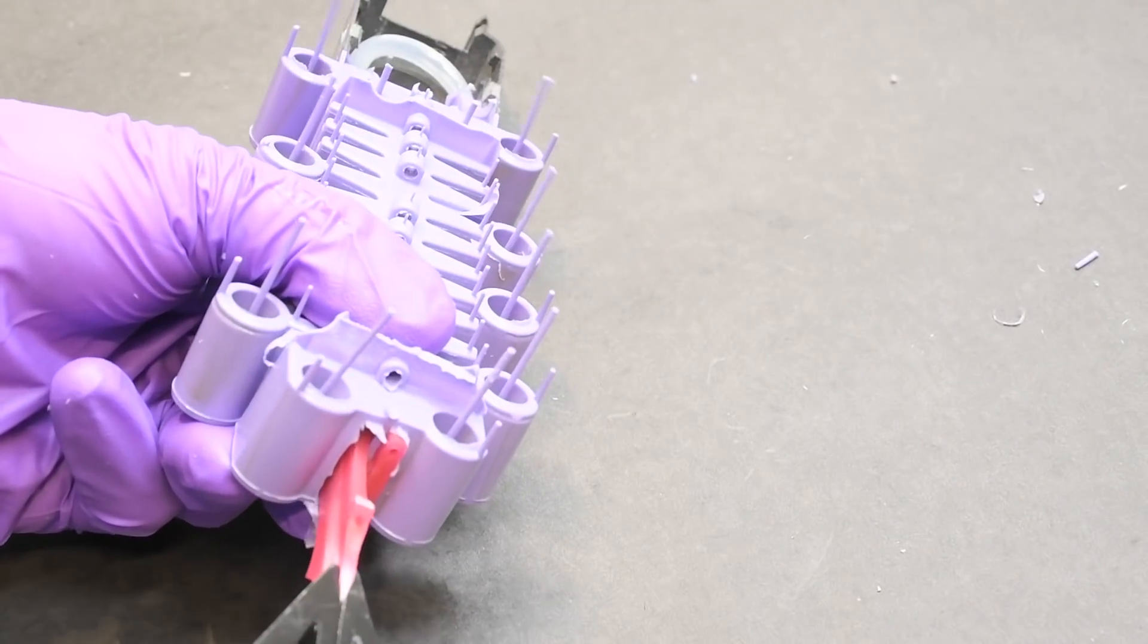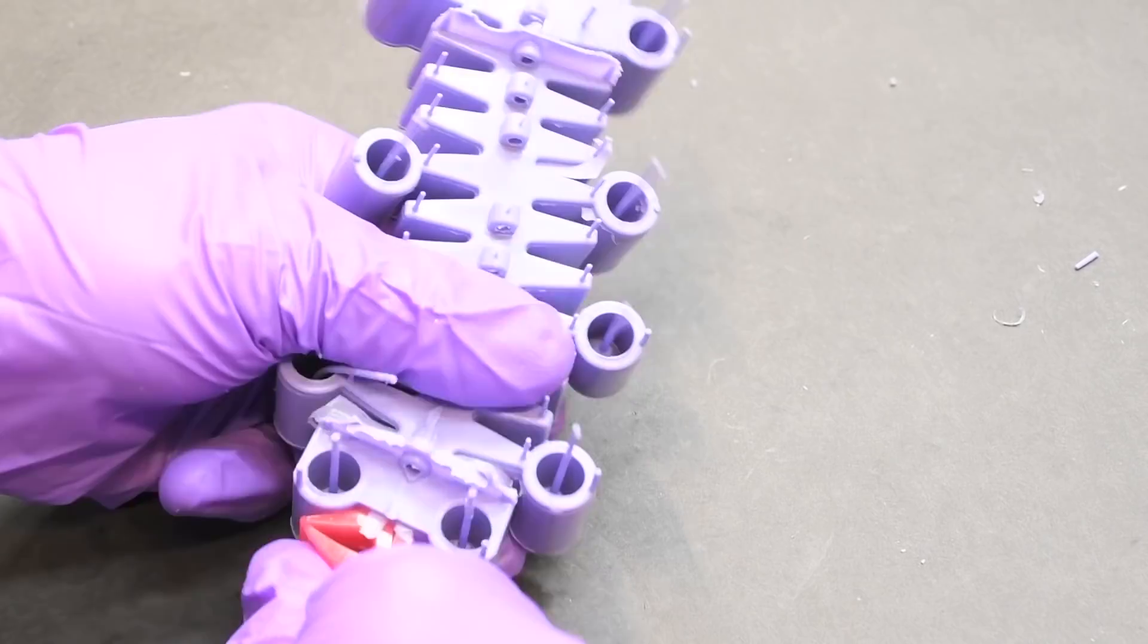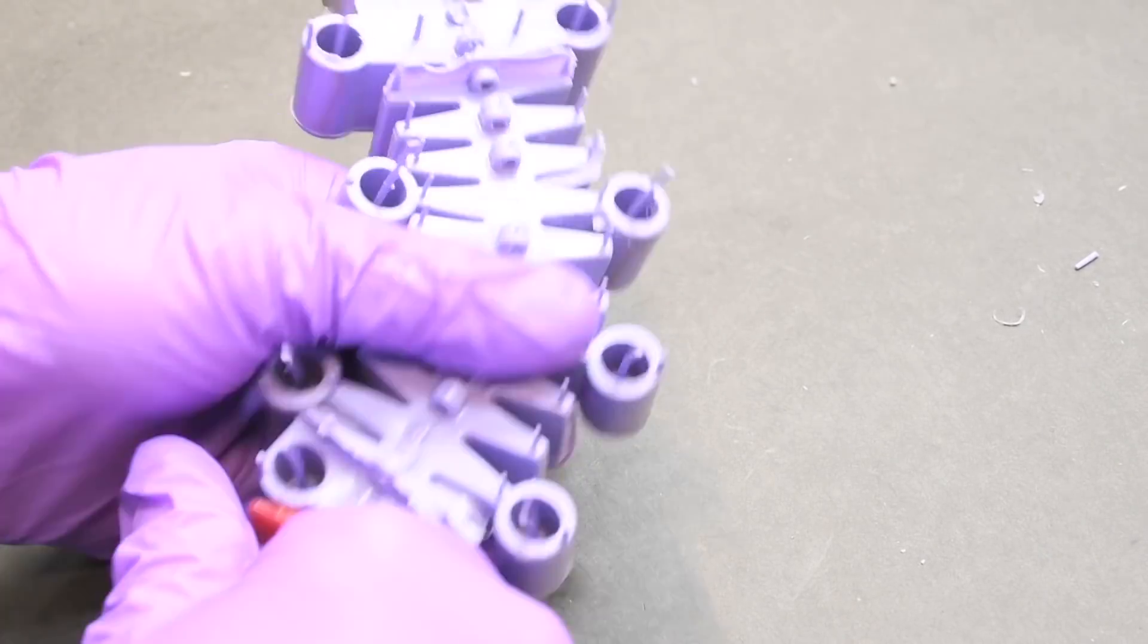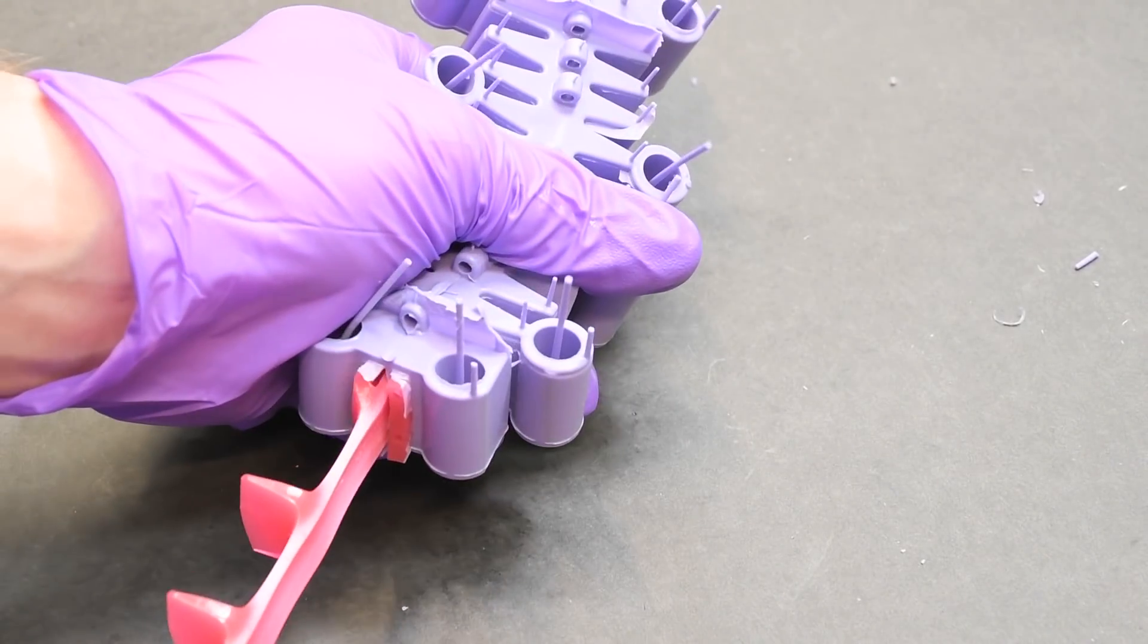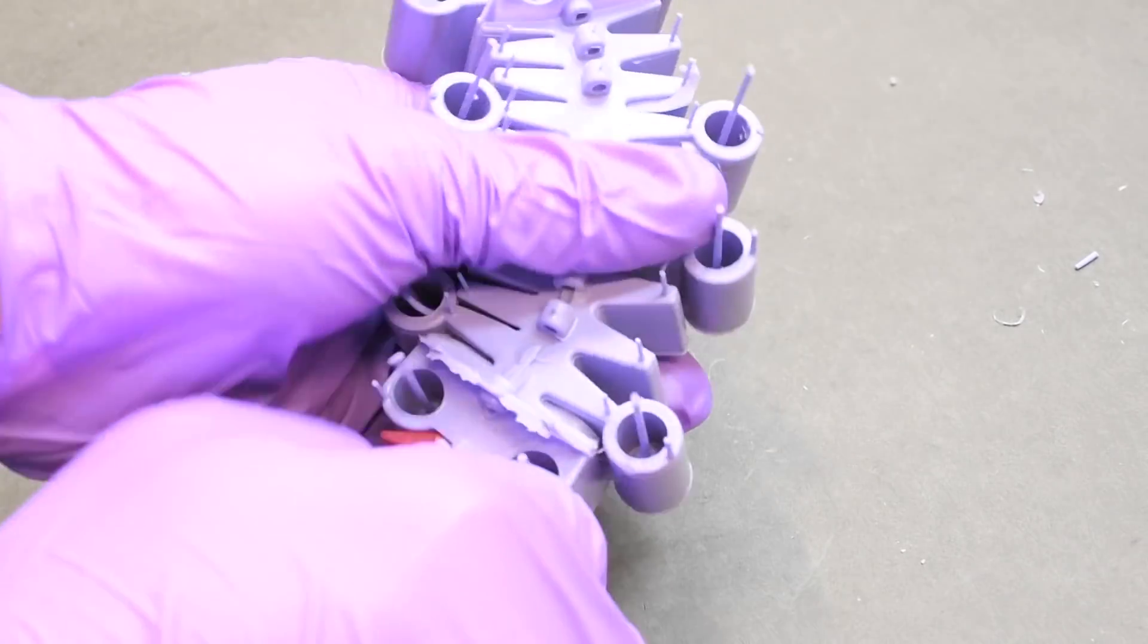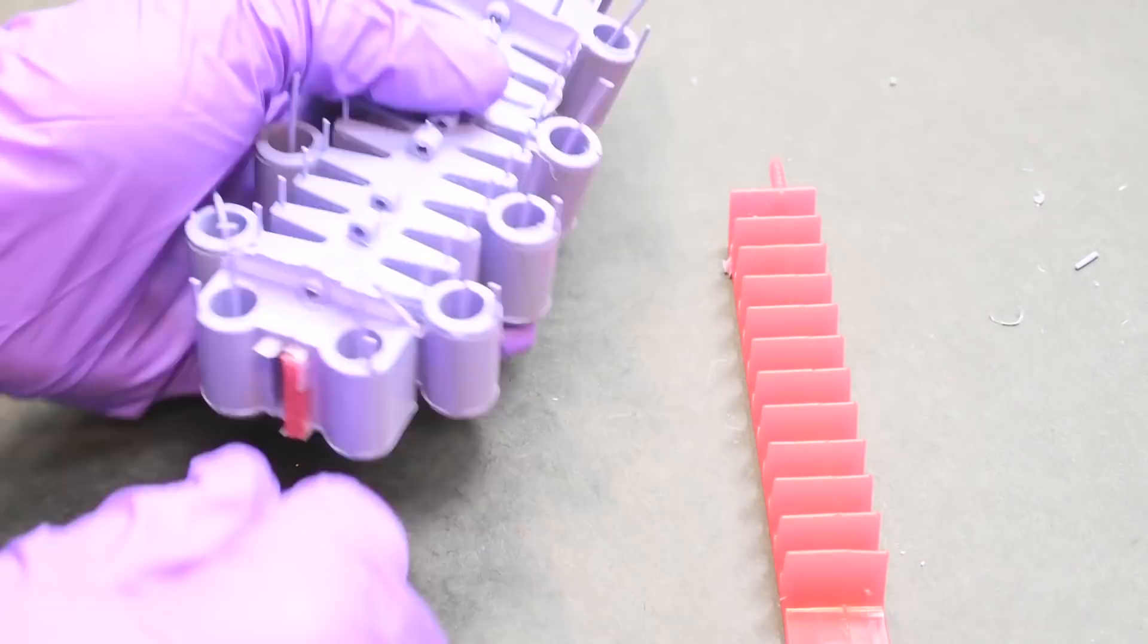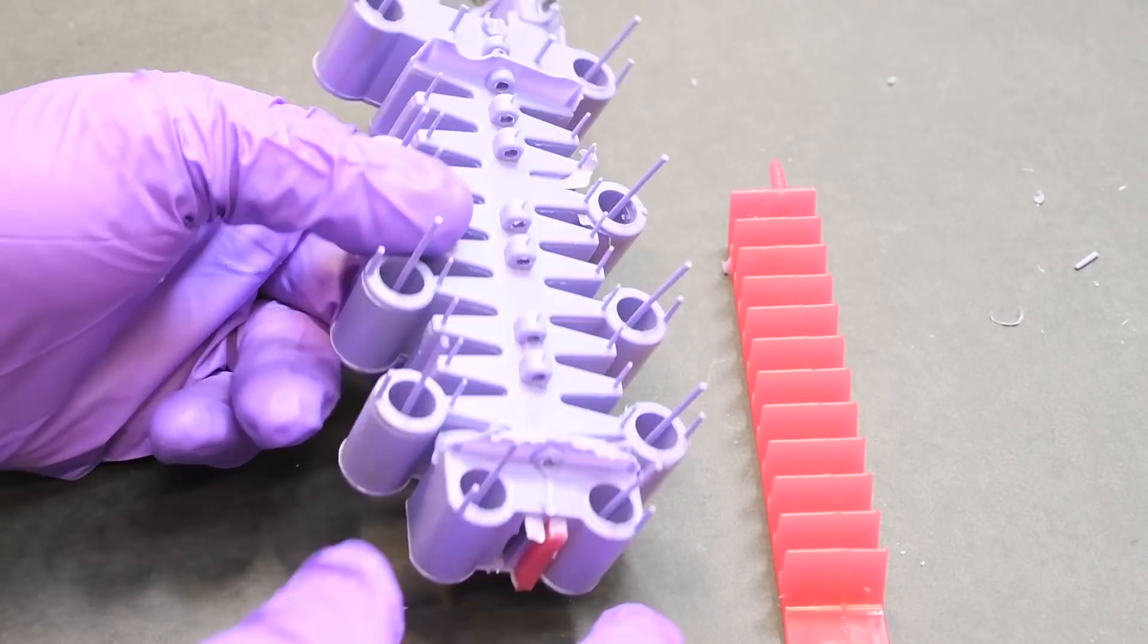Next, we're going to pull out the soft core, first using a parallel jaw plier until we have enough soft core exposed to start pulling by hand. This material is highly extensible, up to 1000% of its original length, which makes it a great material to pull out as a soft core. We're going to do the same for the other side.